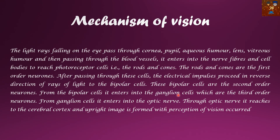Regarding the mechanism of vision, three orders of neurons are involved. The first order neuron leads to the bipolar cells, which constitute the second order neuron. From the bipolar cells, the impulse enters the ganglion cells, which constitute the third order neuron. From the ganglion cells it enters the optic nerve, and from there it goes to the cerebral cortex, where an upright image is formed and perception of vision occurs.